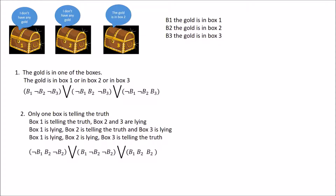Reading left to right: the first possibility is box one telling the truth. Box one said I don't have any gold, so if it's truthful, not B1. Box two is lying — it said no gold, so if lying it does have gold: B2. Box three also lied — it said gold is in box two, so if lying, not B2. That's our first possibility: not B1, B2, not B2.